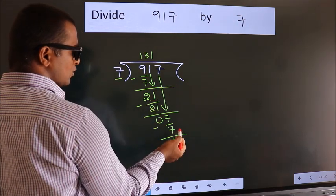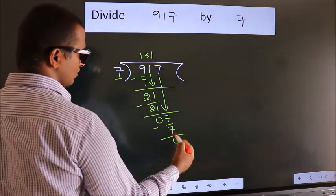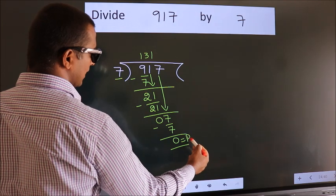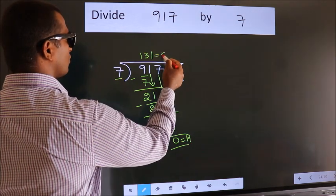No more numbers to bring down. So, we stop here. This is our remainder. This is our quotient.